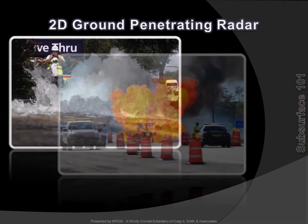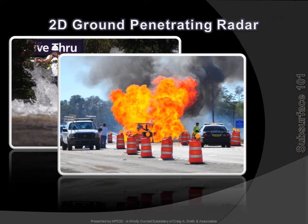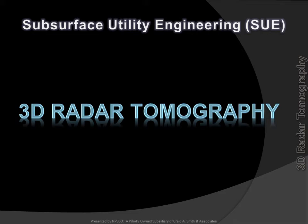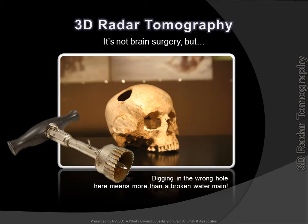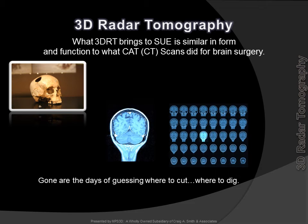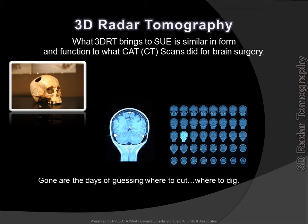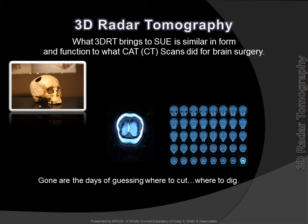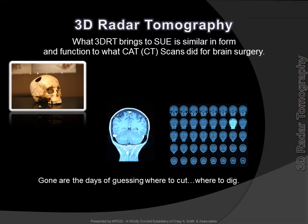The consequences of missed facilities can be disastrous. Enter 3D radar tomography — a precise 3D image of the underground. Digging underground may not be brain surgery, but similar to brain surgery, precision is the key to success. 3D radar tomography creates a virtual CAT scan of the underground. So like brain surgery, knowing where to cut, or where to dig, or for that matter where not to, is critical to the success of the operation.